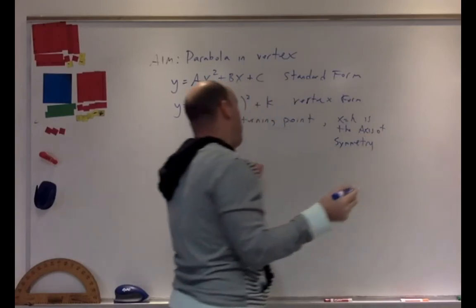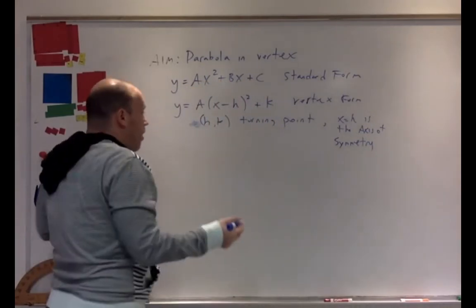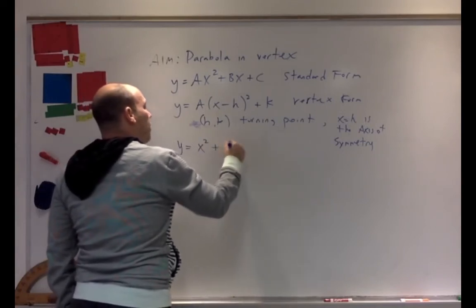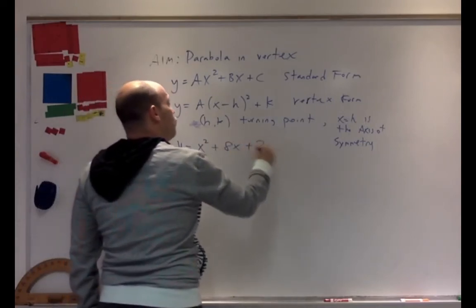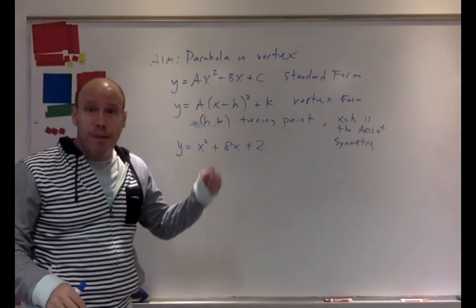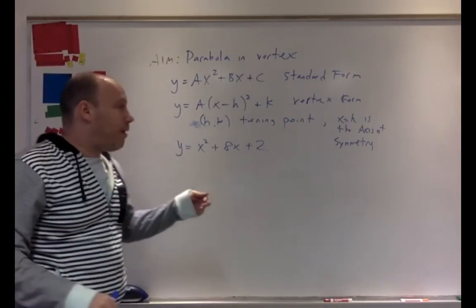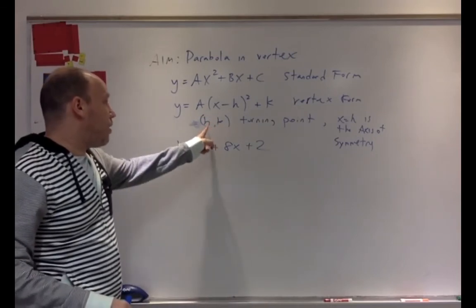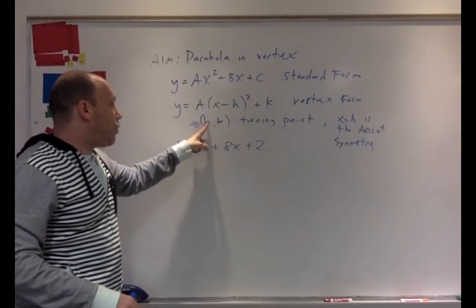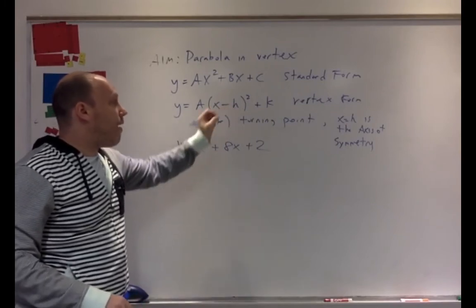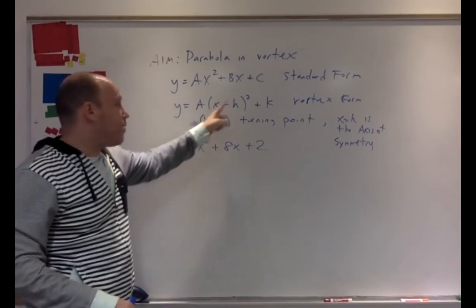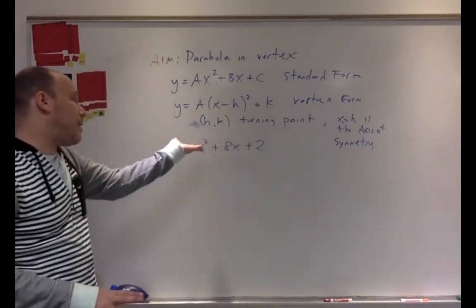So if you take any parabola — for example, Y equals X squared plus 8X plus 2 — you can either do it on the GDC, find the minimum point, and then take the turning point and put it in the equation, remembering that if H is positive it's minus that value, and if H is negative it's plus that value.